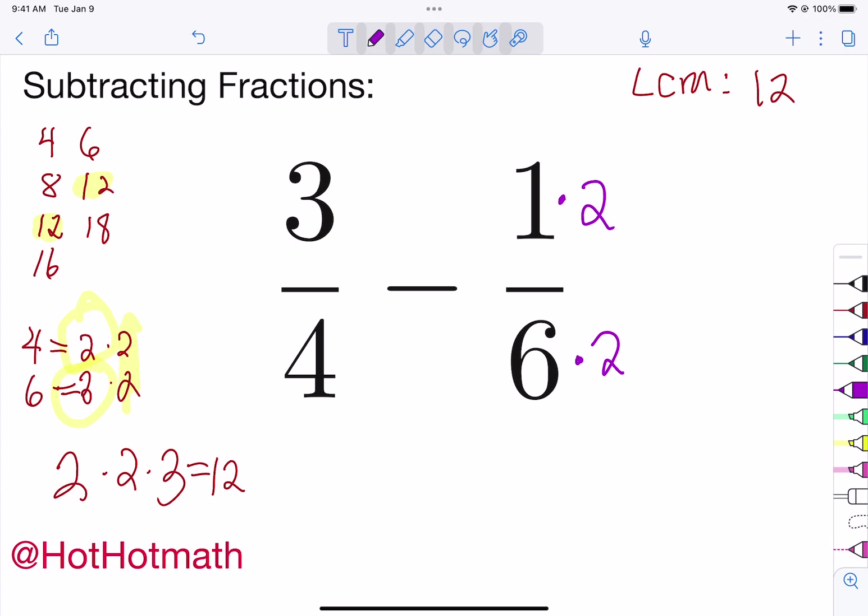So I'm going to multiply there by two and I'm going to put a little multiplication dot here. And whatever I multiply on the bottom, so four goes into twelve three times, so I need a three. I also have to multiply on the top.